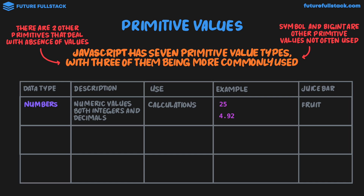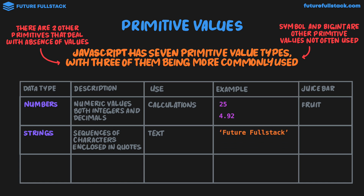The second key primitive value type are strings — a sequence of characters enclosed in quotes. Their main use in JavaScript is for text. Here's a string using single quotation marks of my channel name, and here's the same string using double quotation marks. You can use either single or double quotation marks for strings. In our juice bar analogy, these can be our vegetables — just like there's a whole bunch of vegetables, there's an infinite amount of strings you can create by stringing together different characters of the alphabet.